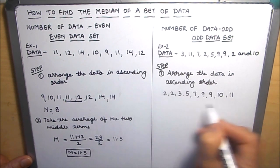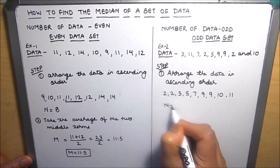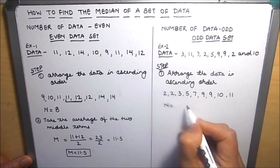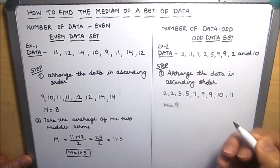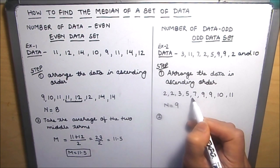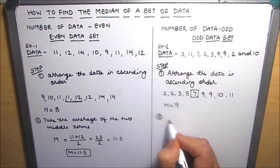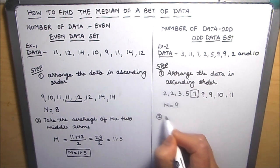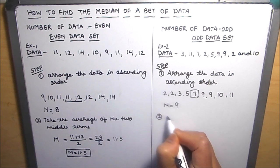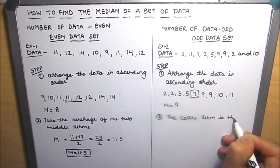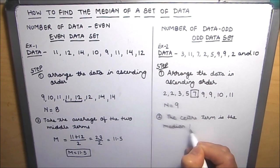The number of terms here is 1, 2, 3, 4, 5, 6, 7, 8, 9 — so the number of terms is odd, which is 9. The median will be the middle number after arranging the data in ascending order. So our median here is 7. The second step is that the center term is the median for the data.